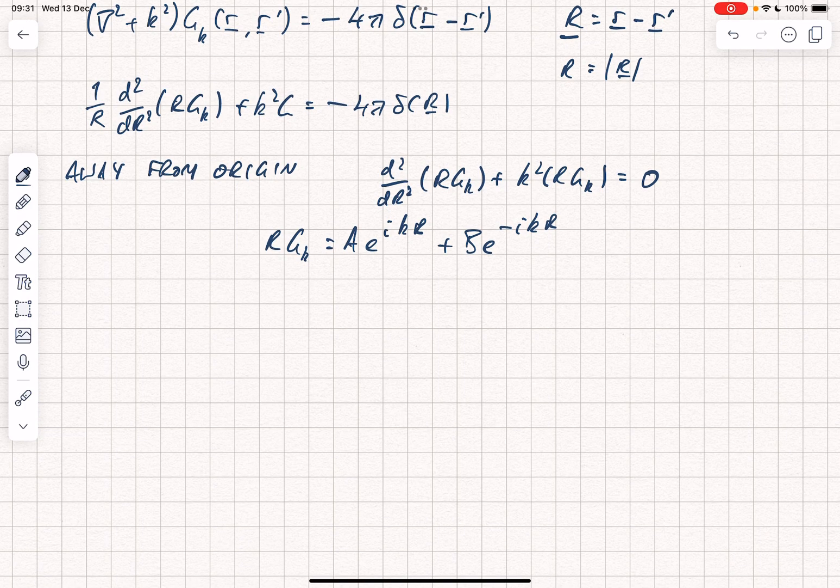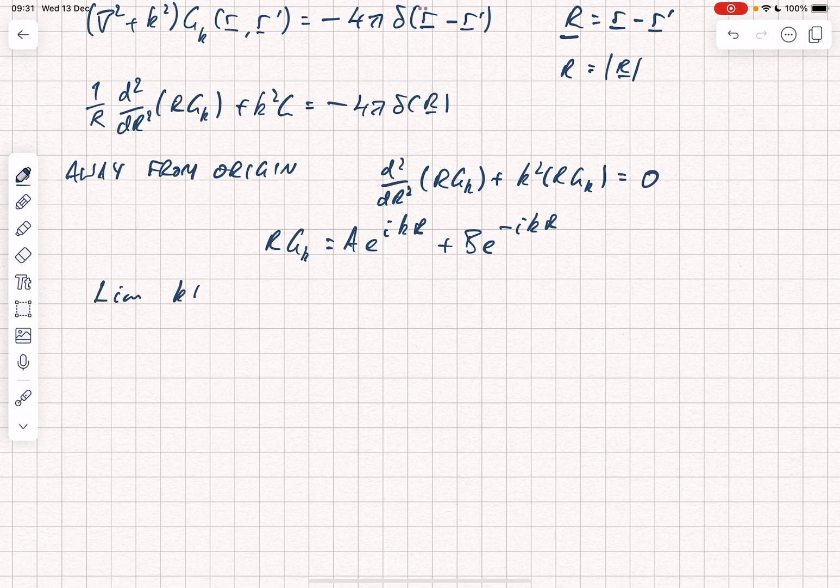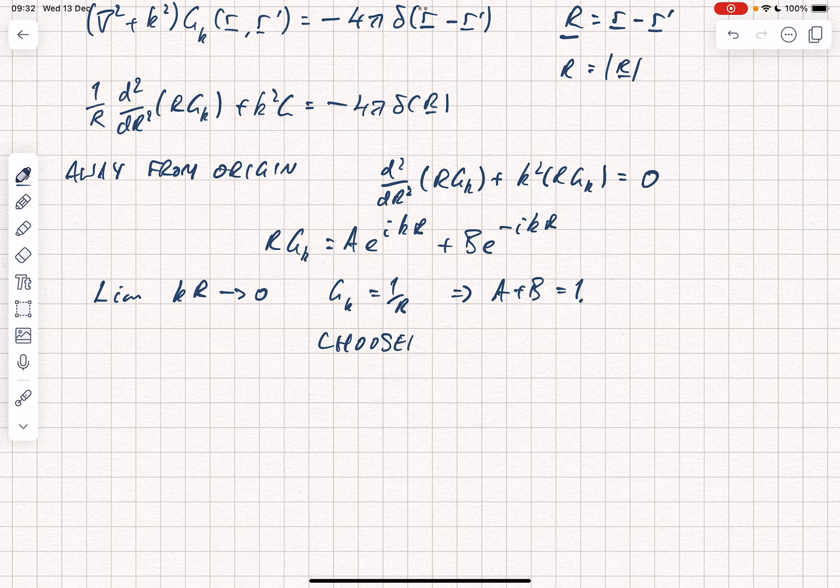We can find a and b by considering the limit where kr tends to 0, and we know from electrostatics that in that limit gk must equal 1 over r, and therefore a plus b equals 1. We're going to choose only e to the i kr because that's an expanding spherical shell. That's an expanding wave, so we're going to keep that.